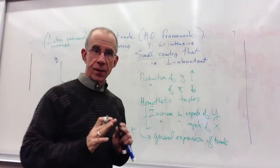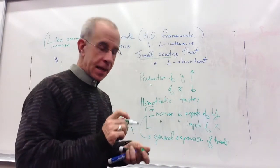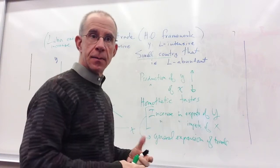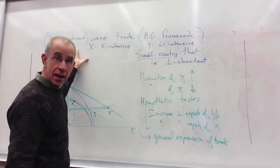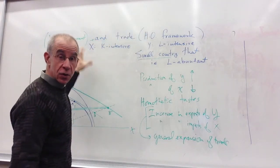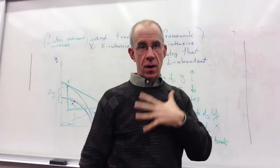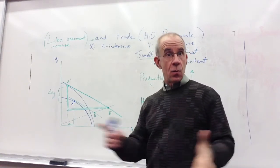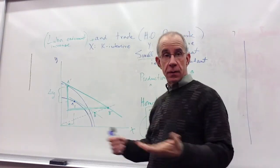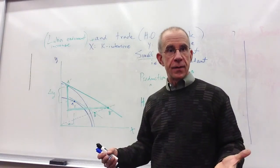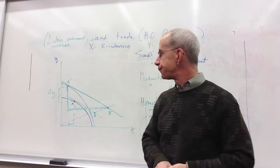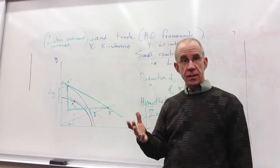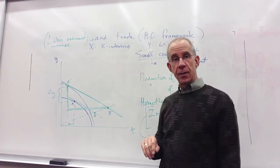Now let's remember what the Heckscher-Ohlin framework is all about. The country has a comparative advantage and a reason to export. Why? Because it's labor-abundant. What you've seen here is that you now have a labor endowment increase, so you're becoming even more different from the rest of the world. This natural thing that you have an advantage in, production of the labor-intensive good, well, that increases even more now that you've got more of this factor that makes you different. So you have this increase in national income, an increase in consumption associated with this labor endowment increase.